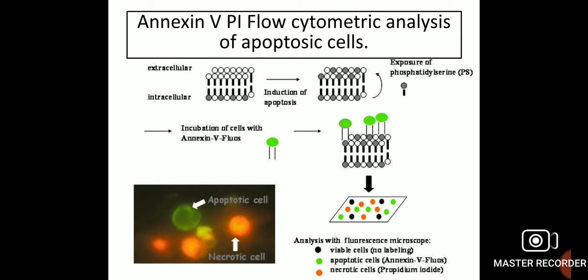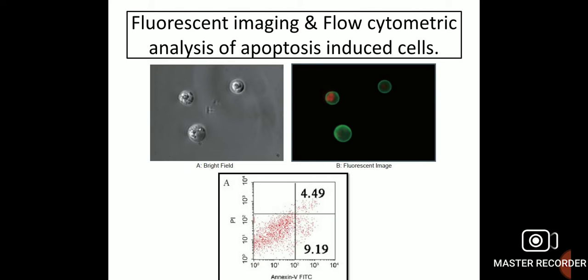A micrograph image shows green cells as apoptotic cells and orange or red fluorescent images as necrotic cells. The upper figures show fluorescence imaging — figure A is brightfield and figure B is the fluorescent image — while the lower figure shows flow cytometric analysis.